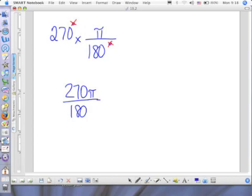Well, how do you reduce 270 and 180? What goes into this? How about 9? How about 90? 270 degrees is 3 pi over 2 radians.